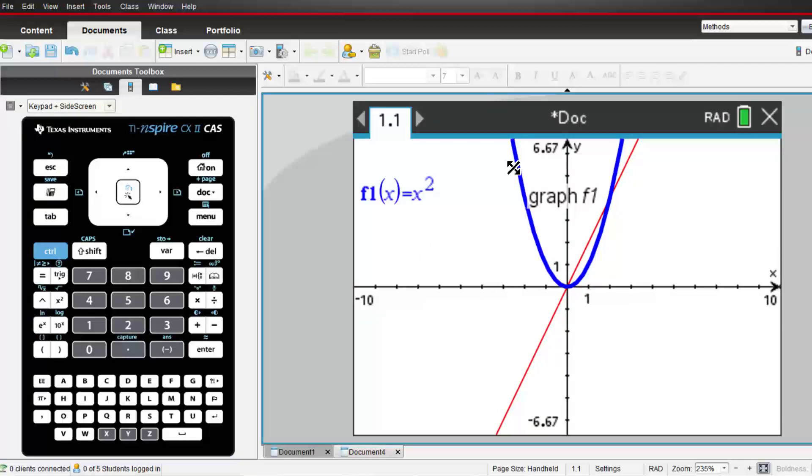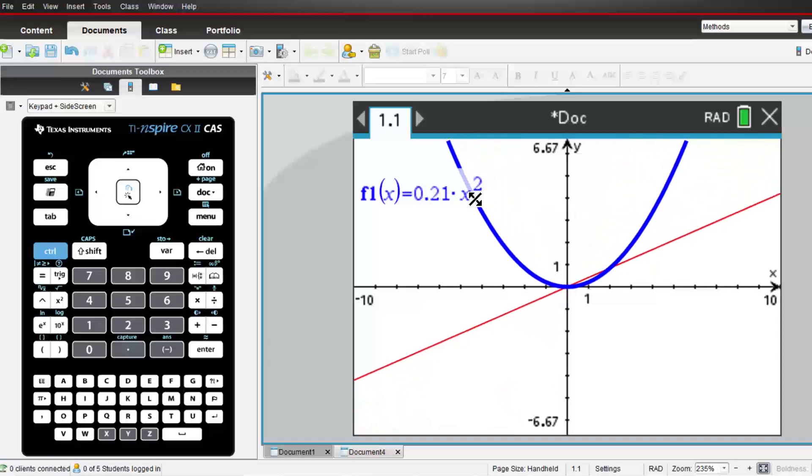The advantage of referencing the function in f1 in our derivative template is that the derivative graph will automatically be updated to reflect changes made to our original function.